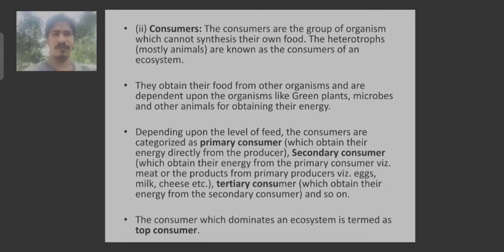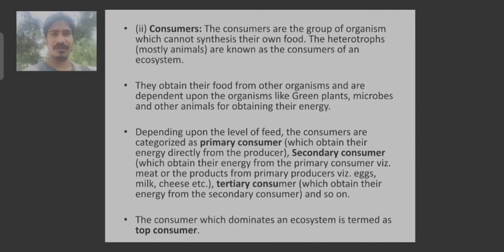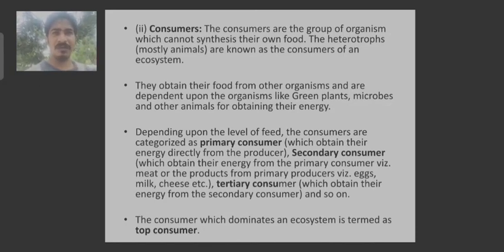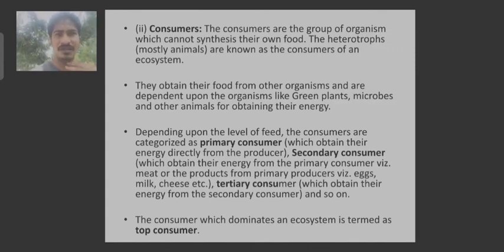Consumers are those organisms which do not prepare their own food but are dependent on other organisms — for example, all groups of animals. Consumers are divided into categories based upon interaction with the primary producers. The first to consume from the producer is the primary consumer; if the primary consumer is eaten by another consumer, that one is the secondary consumer; and if the secondary consumer is eaten by another, it is the tertiary consumer.